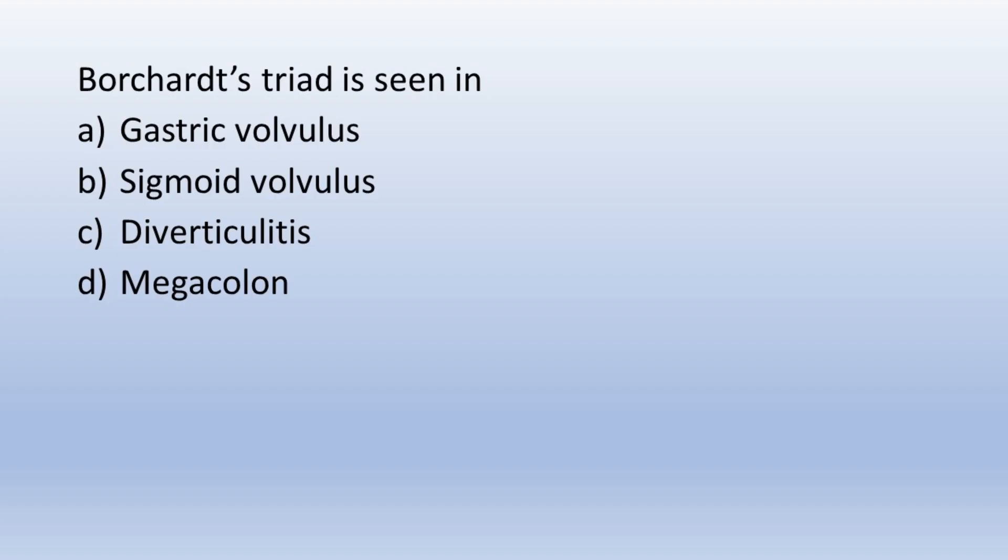Let's solve this MCQ. Borchardt's triad is seen in option A, gastric volvulus; option B, sigmoid volvulus; option C, diverticulitis; option D, megacolon. Yeah, that's it guys.